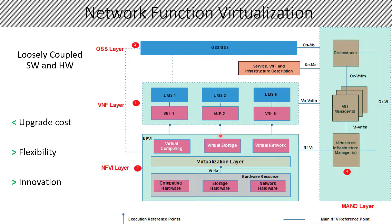This is what the NFV architecture looks like. First, there is OSS-BSS, which is customer-site applications or portals through which customers are given care. For example, if a customer has a complaint regarding service from a network operator, they go to the customer care center. These customer care centers have OSS-BSS applications through which they can solve the problem of a specific customer. It is a traditional mechanism to solve user or subscriber problems. The VNF layer, NFVI layer, and MANO layer are the new ones which provide flexibility in the virtual network environment.